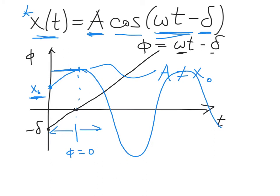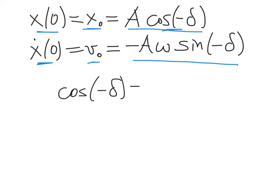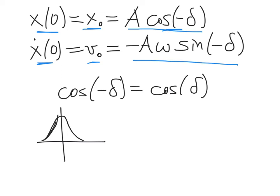Let's relate the amplitude and phase angle δ to the initial displacement x₀ and initial velocity v₀. At t=0, plugging into our solution gives x₀ = A·cos(−δ). Taking the time derivative and plugging in t=0 gives v₀ = −Aω·sin(−δ). Using the even and odd function properties—cosine of a negative angle equals cosine of the positive angle, and sine of a negative angle equals minus the sine of the positive angle—we simplify these expressions.